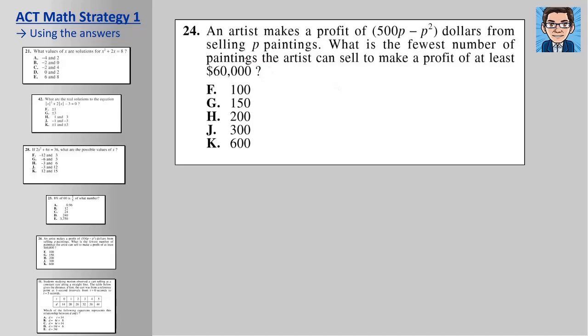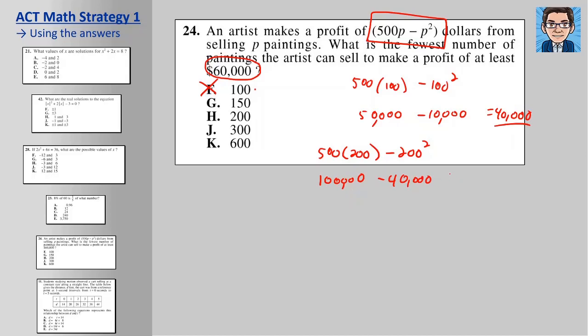So here, we want profits of at least 60,000. And here's our profit equation. So again, we're just going to plug these in and see which one works. So we were plugging 100. 500 times 100 minus 100 squared. It's going to get us 40,000 and that doesn't work. Now I know I didn't take my advice and go to the middle one because I just wanted to show you trying one. So let's jump to the middle one. Let's try 200 now.